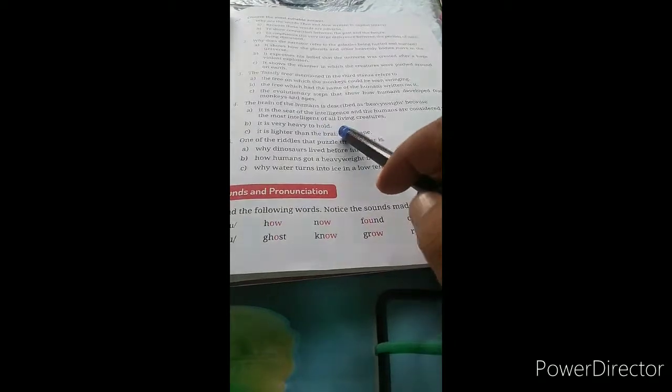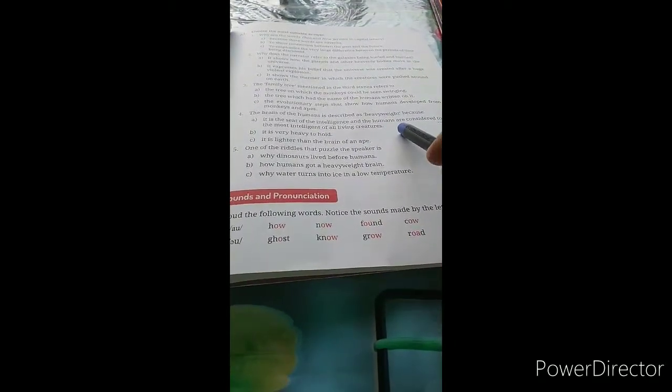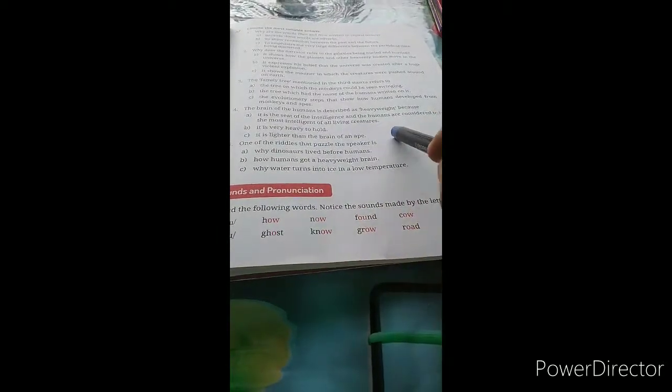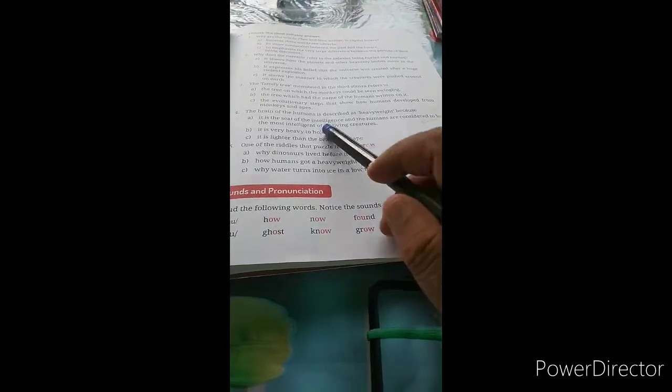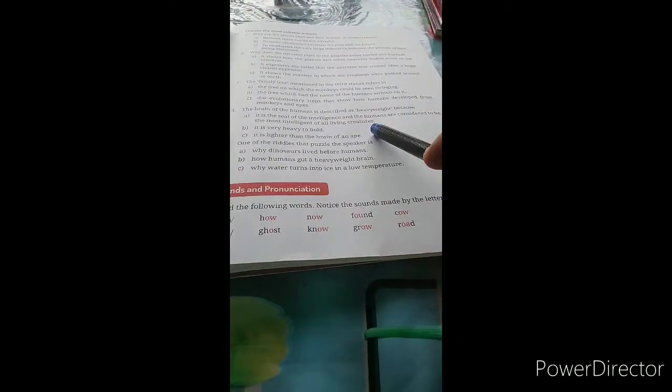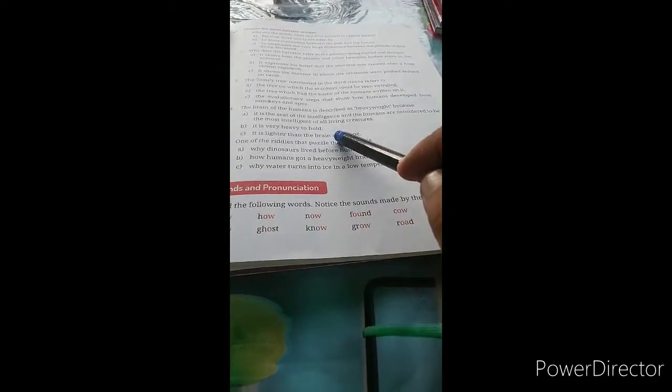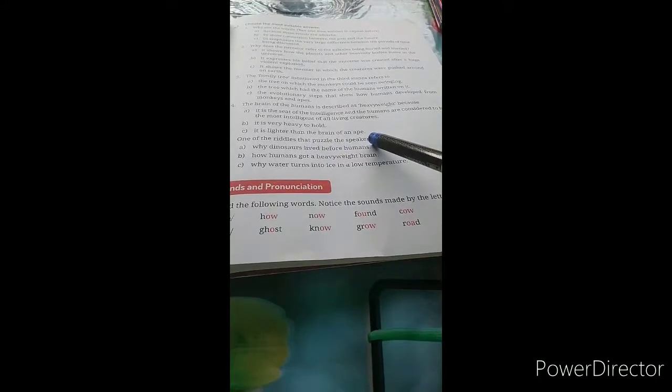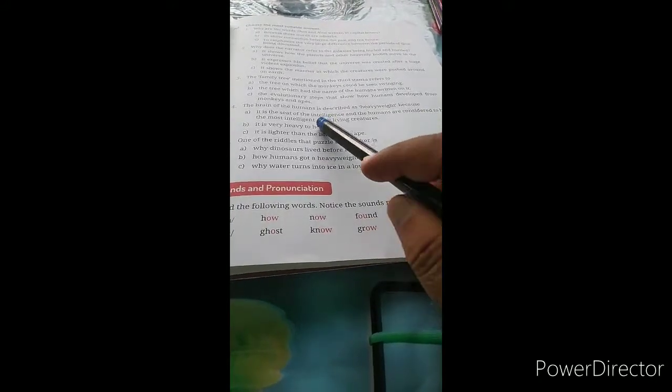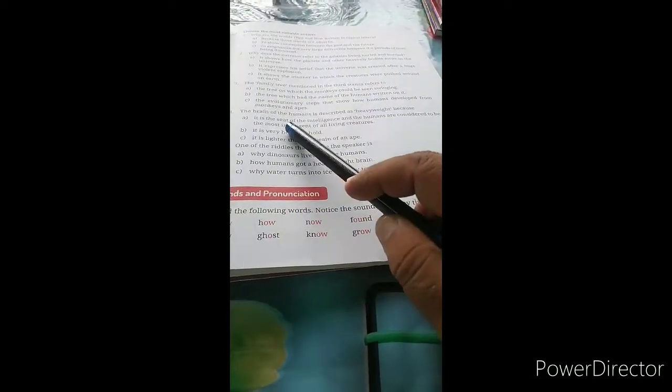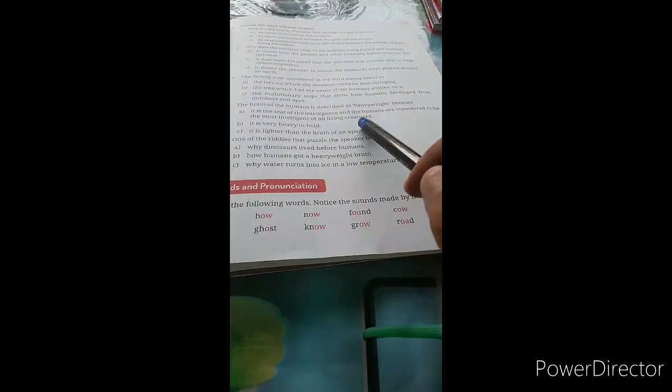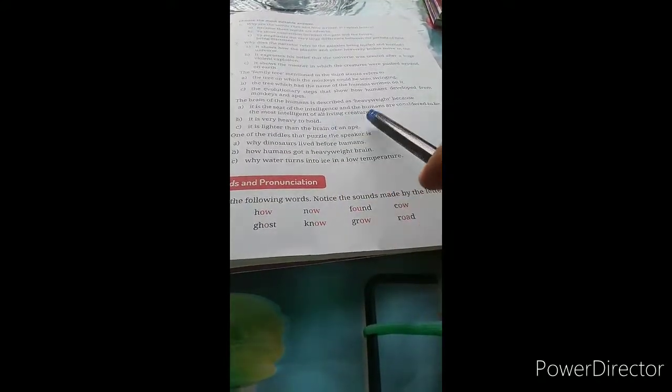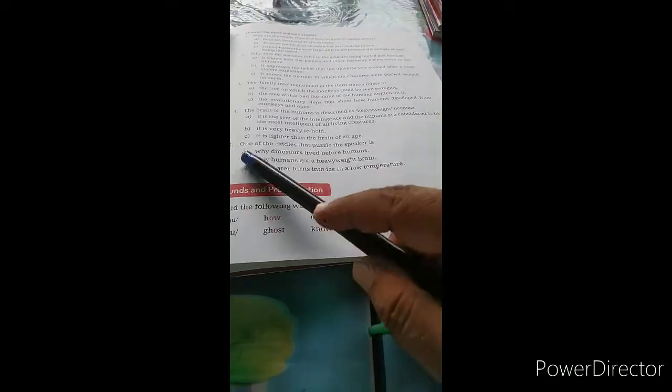Question four: The brain of the humans is described as heavyweight because: A - it is the seat of intelligence and humans are considered to be the most intelligent of all living creatures, B - it is very heavy to hold, C - it is lighter than the brain of an ape. Option A seems most suitable - it is the seat of intelligence and humans are considered to be the most intelligent of all living creatures.